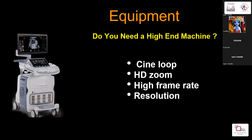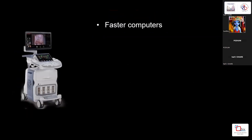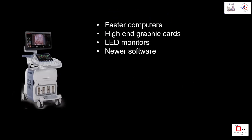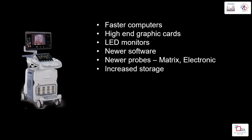Regarding equipment: do you need a high-end machine? Almost all mid- and high-end machines have cine loop, HD zoom, high frame rate, and good resolution. Nowadays high-end machines have faster computers, high-end graphics cards, LED monitors, and multiple newer softwares. Newer probes like matrix and electronics are available.